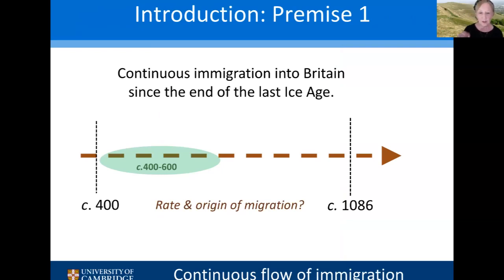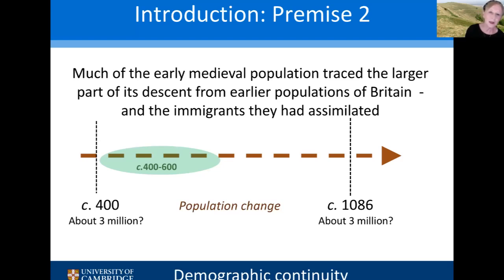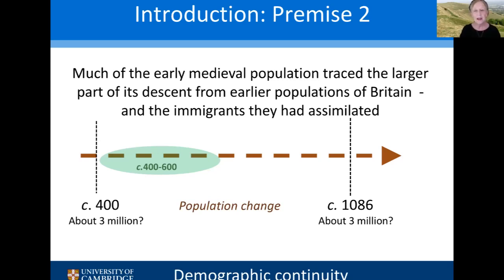I'm making two premises — two things I'm taking for granted. The first is that there has been continuous immigration into Britain since the end of the last Ice Age. The second is that much of the population of this country around 400 traces the larger part of its descent from the earlier populations of Britain — their ancestors had lived here — and in amongst that population were people who had migrated in over those millennia and been assimilated into the communities they arrived among. So: migration had been continuous, and the large early medieval population was native born.